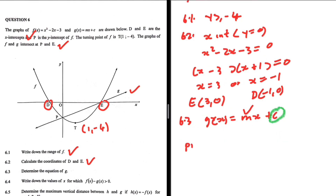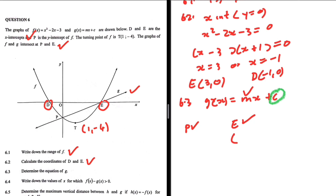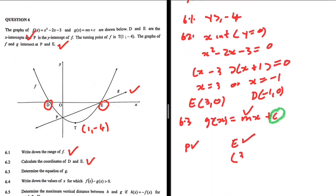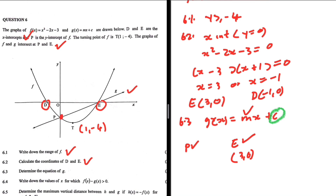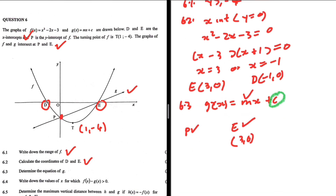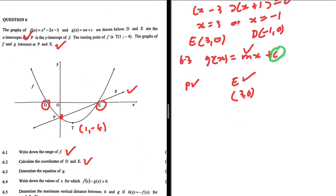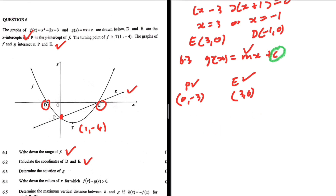Let's determine the coordinates of P and E. We already have E as (3, 0). For P, which is the y-intercept of f, we let x = 0: y = 0² - 2(0) - 3 = -3. So the coordinates of P are (0, -3). Now we have both P and E to find the gradient.